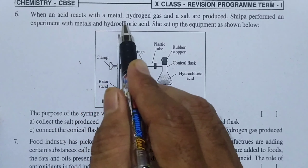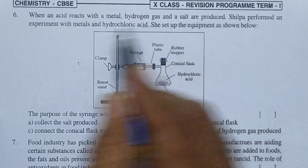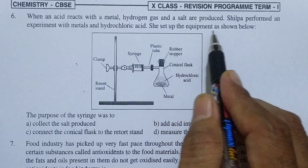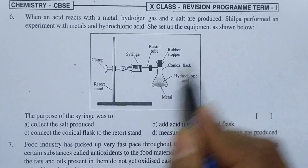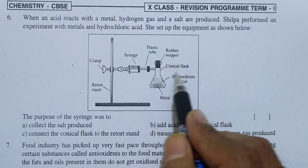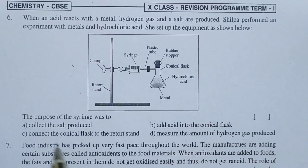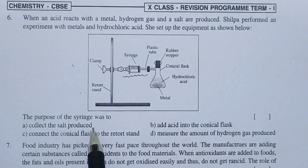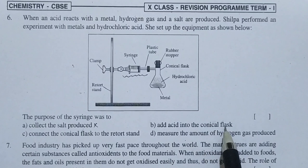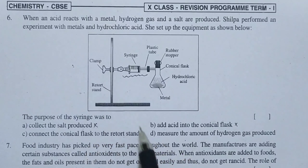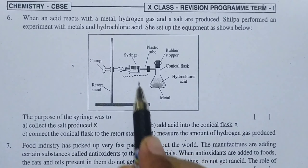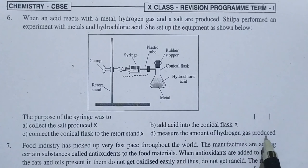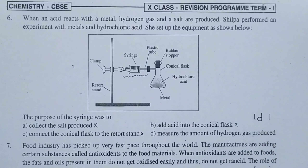Now we see question number 6. When an acid reacts with a metal, hydrogen gas and salt are produced. Shilpa performed an experiment with metals and hydrochloric acid using a retort stand, clamp, syringe, plastic tube, rubber stopper, and conical flask containing HCl and metal. The purpose of the syringe is to measure the amount of hydrogen gas produced, so option D is the right answer.